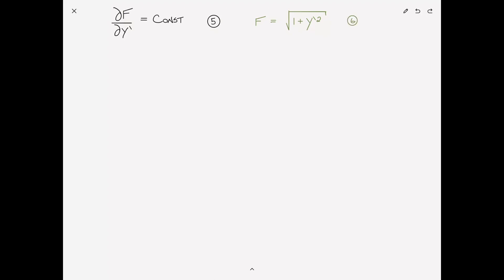We then substitute equation 6 into equation 5, which amounts to taking the derivative of f with respect to y prime gives us y' divided by root 1 plus y prime squared, and of course is equal to a constant. That is equation 7.